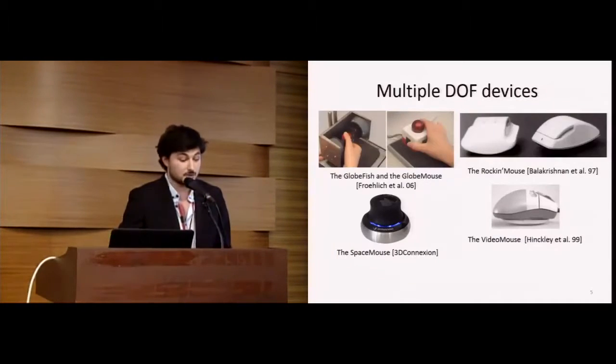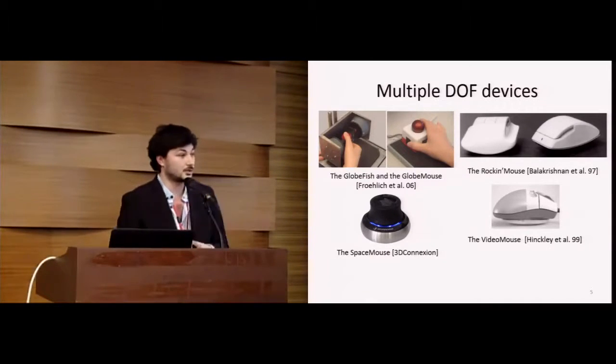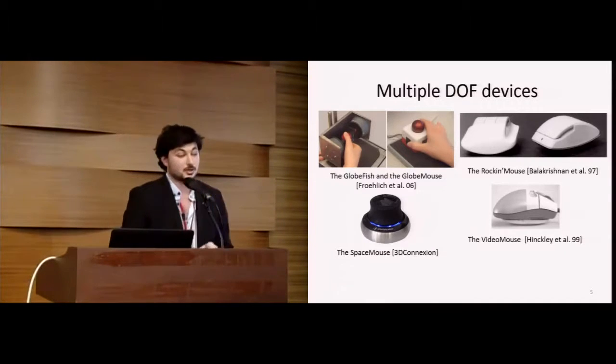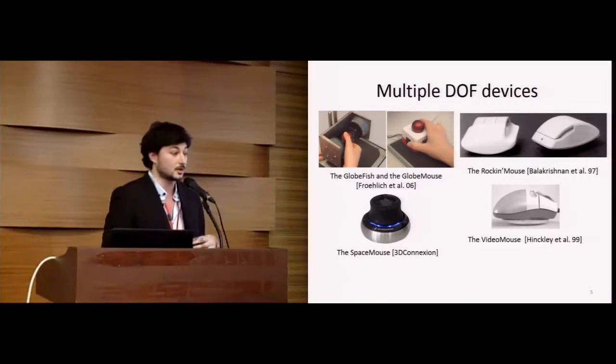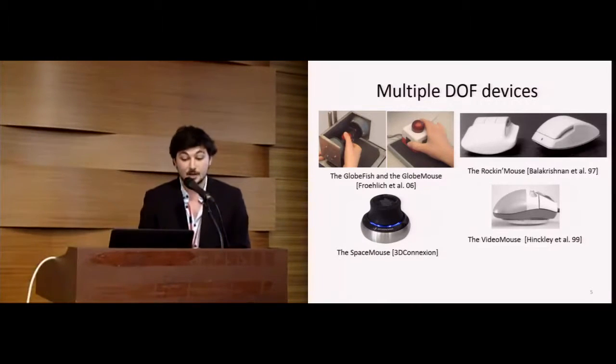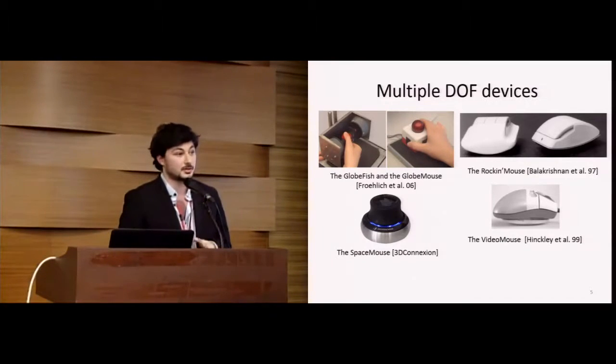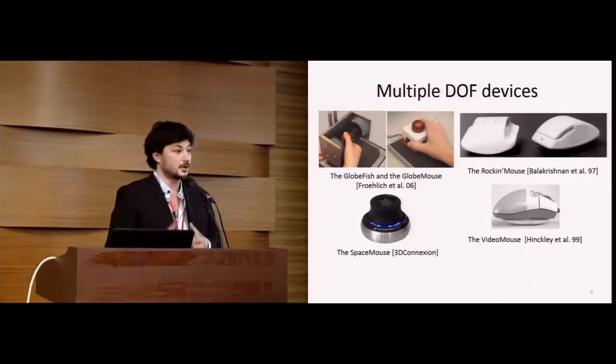Other approaches try to use augmented mice with additional degrees of freedom, like the GlobeFish and GlobeMouse, which are based on a round ball, or the SpaceMouse, a commercialized device. Two founding works on this topic are the Rockin Mouse and the VivoMouse, which are augmented mice with rounded bottom parts. And they allow for rolls and rotations.